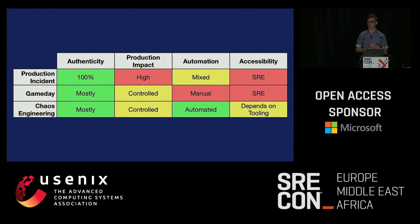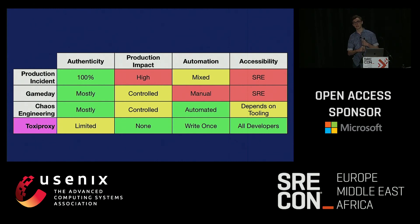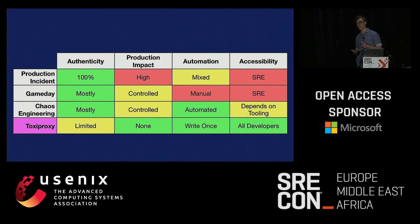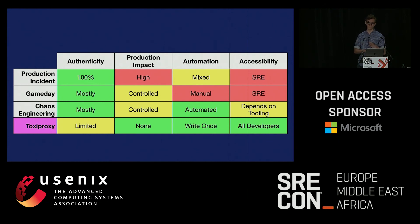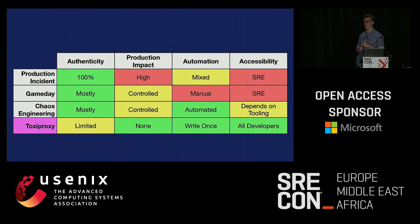We can go back to the qualities we discussed earlier — production incidents, game days, chaos engineering — and add Toxiproxy. Authenticity is probably the only place where it's limited, mainly because we're running in test and development rather than in production, so the range of possible failure scenarios is smaller. However, the failure scenarios it does support, it supports really well and quite authentically — it's a proxy that injects failures at the network level. That's a much better alternative to injecting failures with mocks in your test suite, because you tend to write mocks wrong, which can create edge cases and cause production incidents.